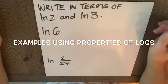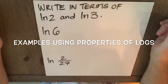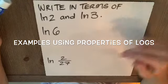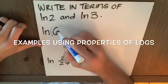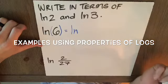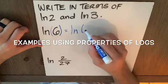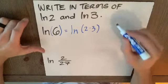Our directions here in this example are to write each expression in terms of natural log 2 and natural log 3. Natural log 6. Note, our argument here is 6. So I can make an equivalent expression, natural log of 2 times 3.